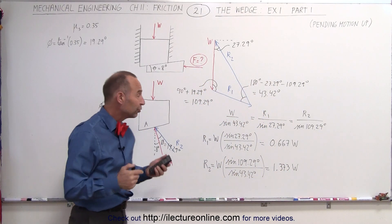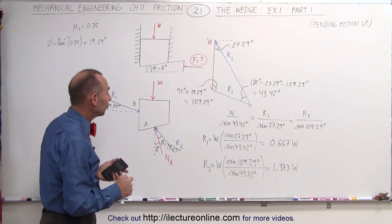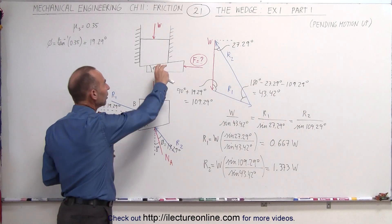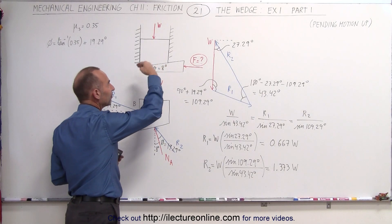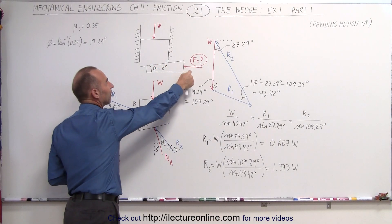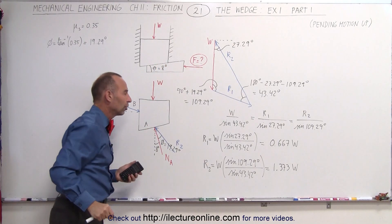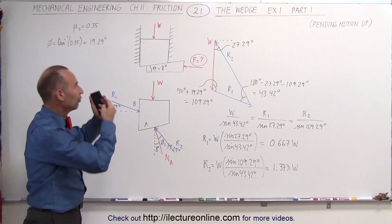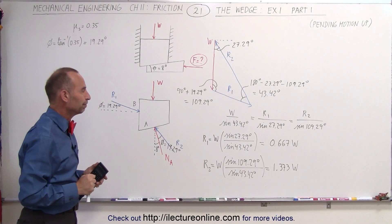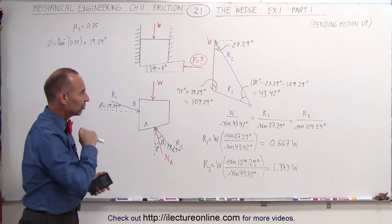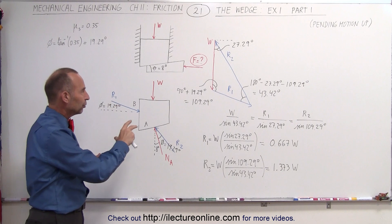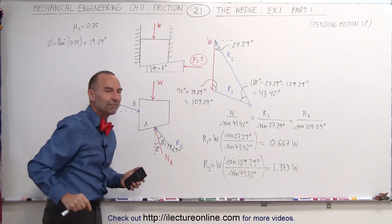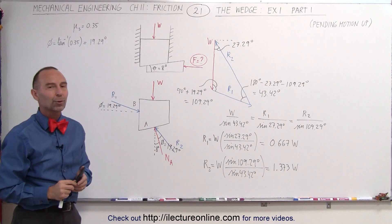Once we have those two forces, we can draw a free body diagram for the wedge and finally find the force required to just start moving the block upward. That's how we begin the problem. Now we'll go to part two to show how to find the final force required.